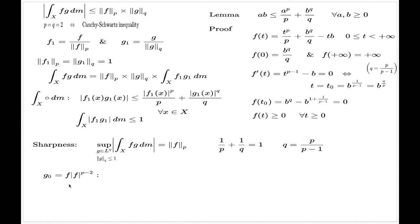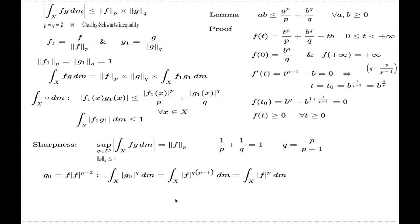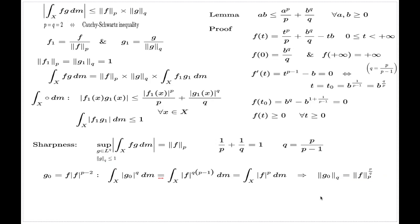First I introduce the function g0. What I claim is that if I compute the q-th power integral of g0, substituting in gives an expression, and with the help of the relation between p and q, this equals the p-th power integral of f. Recalling the definitions of the LP and LQ norms, you can rewrite this identity in simple terms.